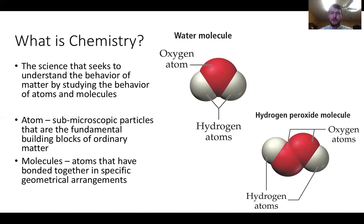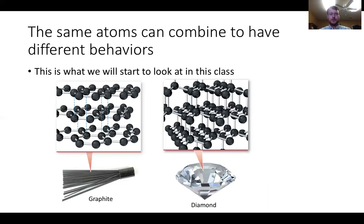Molecules are atoms bonded together in specific geometrical arrangements. We'll talk about shapes of molecular bonding and why that matters. Interestingly, the same atom can combine differently and produce different behaviors. Graphite and diamond are both made of pure carbon, but the arrangement of the atoms differs — graphite is cheap and used in pencils, while diamond is extremely hard and expensive. The arrangement alone makes the difference.